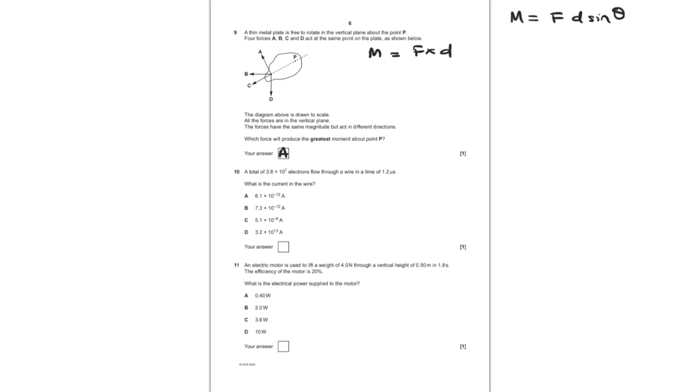For question number 10, we are given that a total of 3.8 times 10 to the 7 electrons flow through a wire in a time of 1.2 microseconds. What is the current in the wire? We know current is equal to Q over T. And Q can be written in form of number of electrons times by the charge on electrons divided by the time. If I pop in all the numbers, 3.8 times 10 to the 7 electrons, followed by 1.6 times 10 to the minus 19 coulombs of charge, divided by 1.2 times 10 to the power of minus 6 seconds, that would give me an answer of 5.1 times 10 to the minus 6 to two significant figures, and therefore C is the answer.